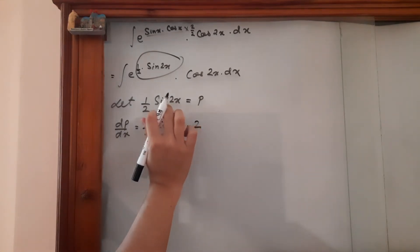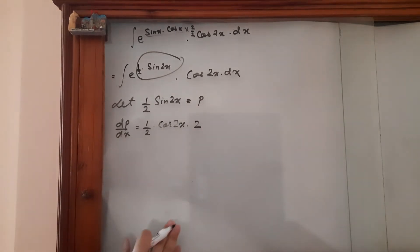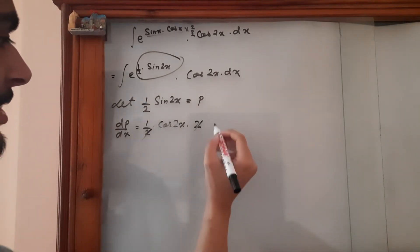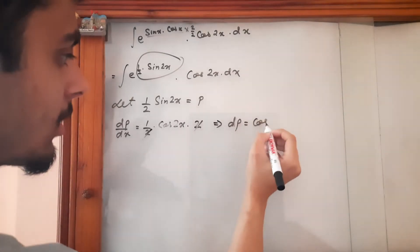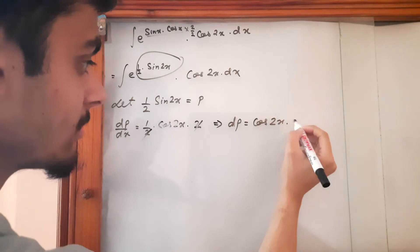First you differentiate sine 2x with respect to 2x and then differentiate 2x with respect to x. You get this. So this 2 cancels this. This implies that dp is equal to cos 2x times dx.